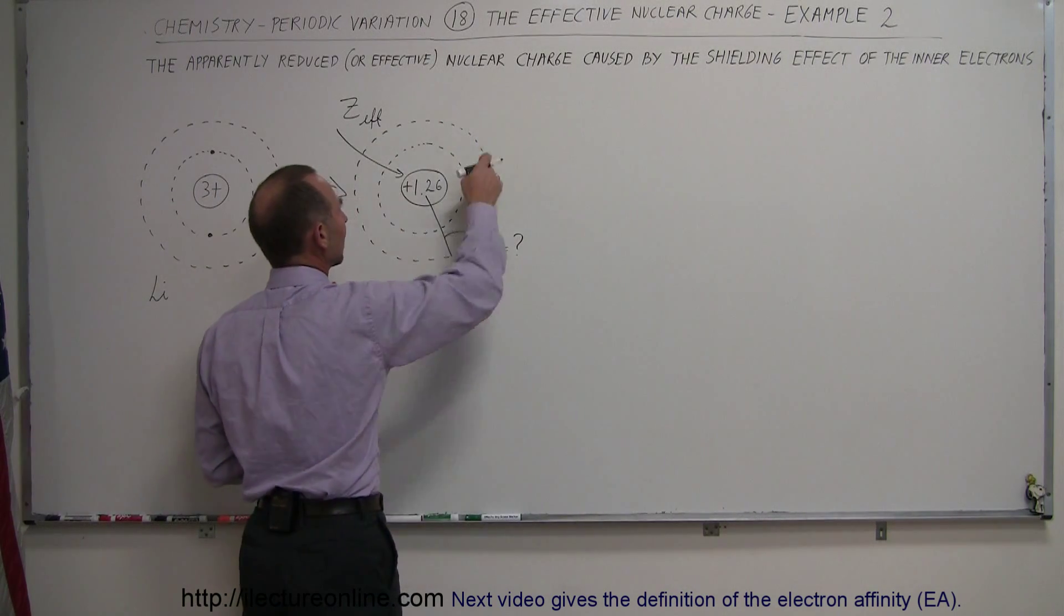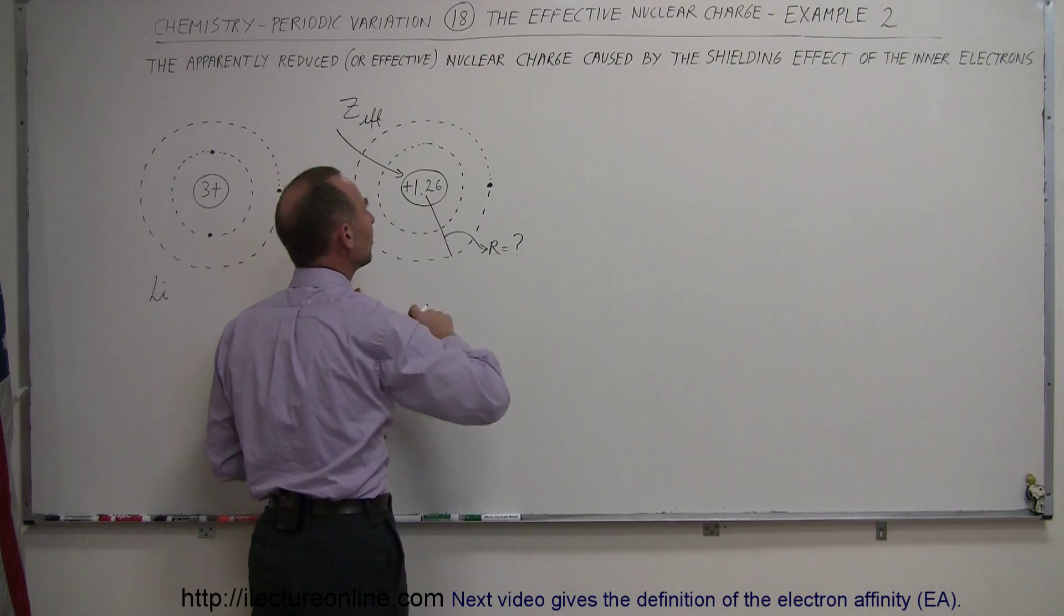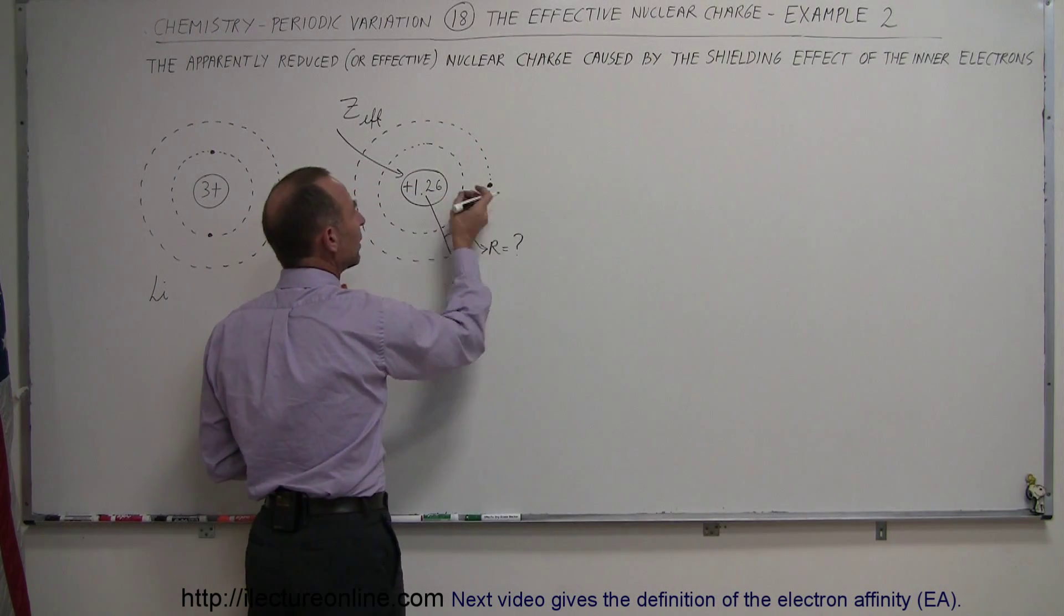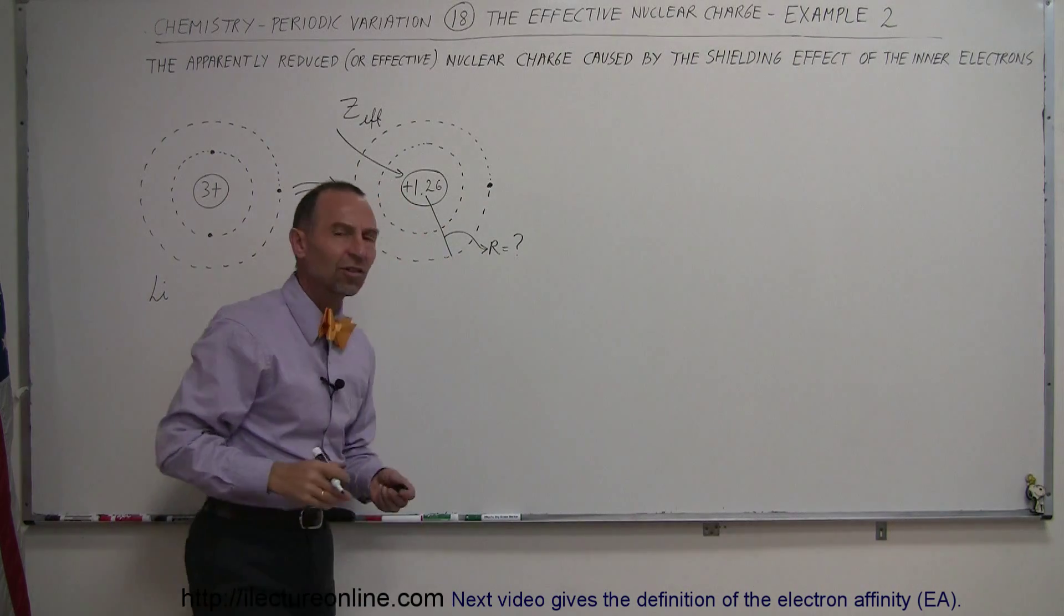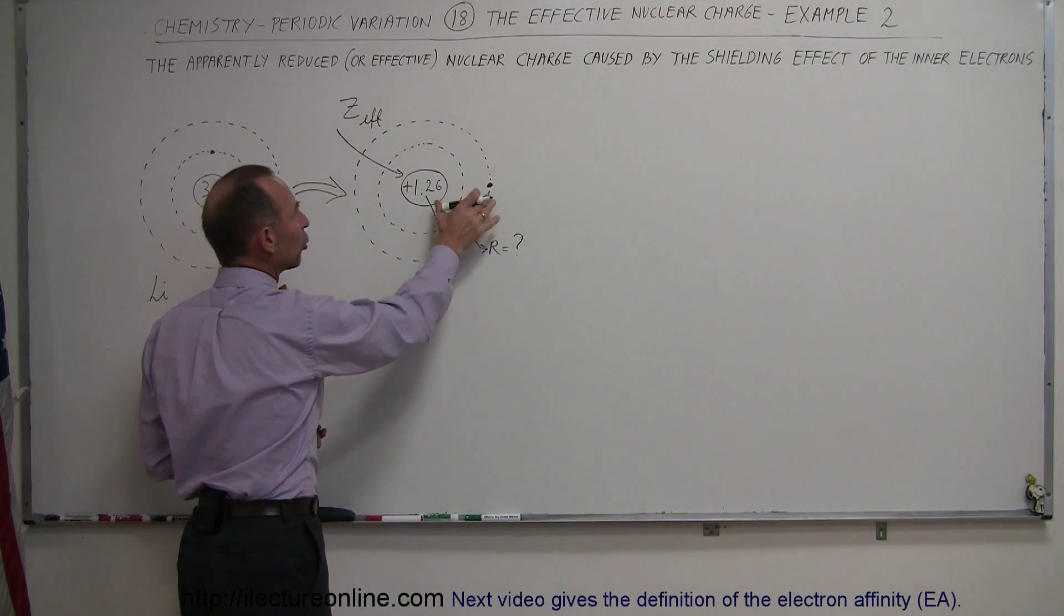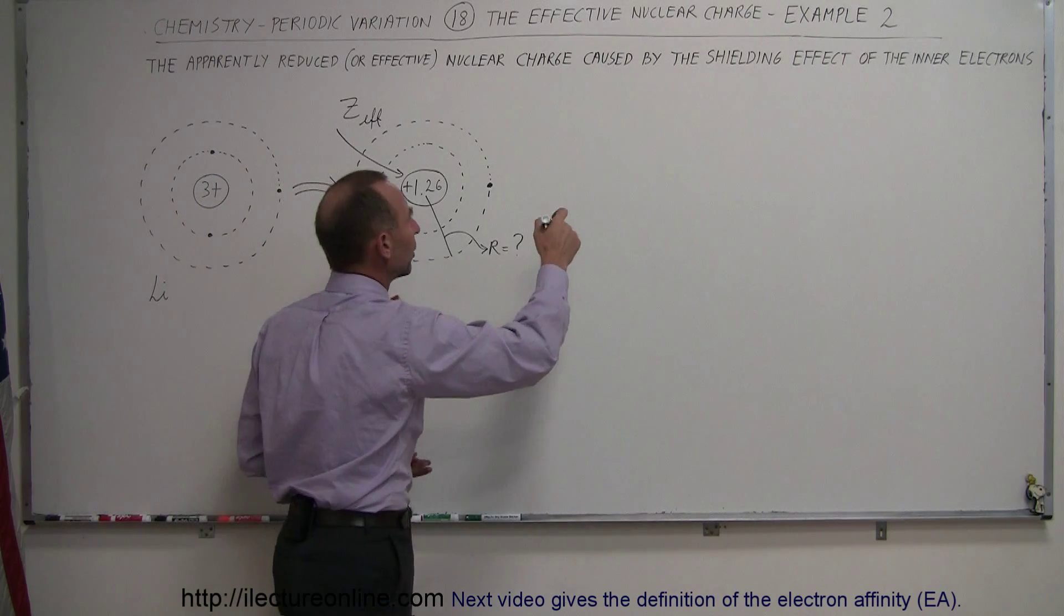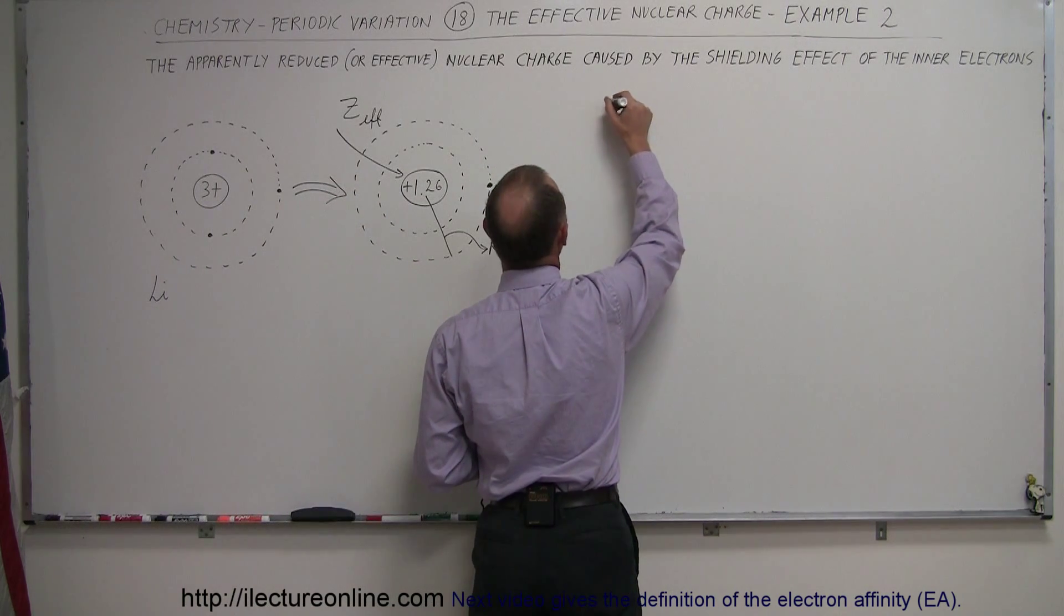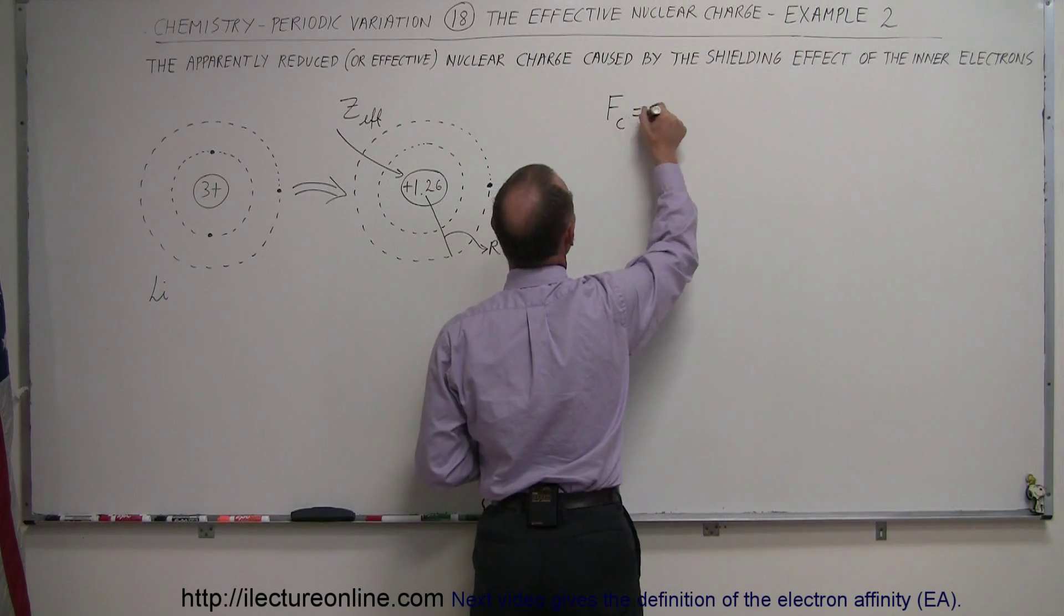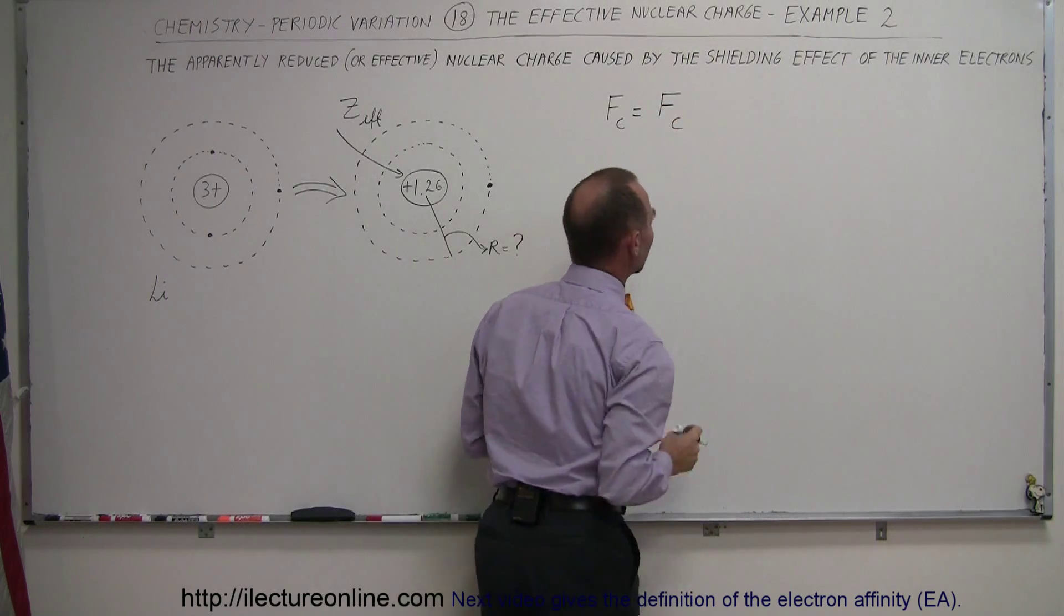We have the electron zipping around the nucleus at very high velocities, and so the centripetal force would have to be equal to the Coulomb force in order to keep it into orbit. So we can say that the centripetal force must equal the Coulomb force.